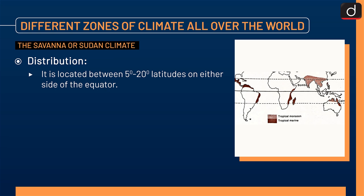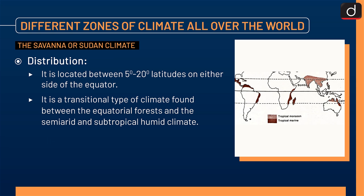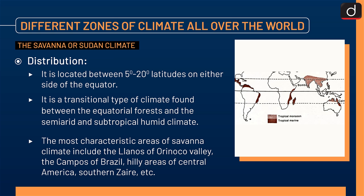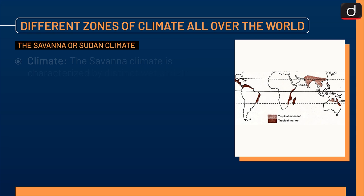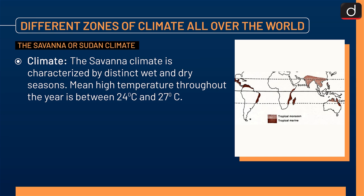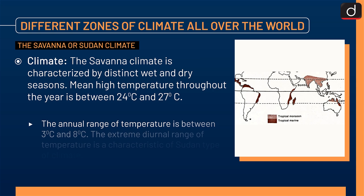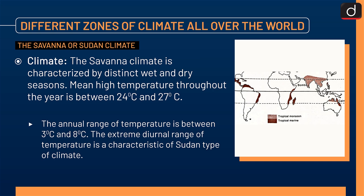The next zone is the Savannah or Sudan climate. Distribution: it is located between 5 degrees to 20 degrees latitudes on either side of the equator. It is a transitional type of climate found between the equatorial forest and the semi-arid and subtropical humid climate. The most characteristic areas include the Llanos of Orinoco Valley, the Campos of Brazil, hilly areas of Central America, Southern Zaire, etc. The Savannah climate is characterized by distinct wet and dry seasons. Mean high temperature throughout the year is between 24°C and 27°C. The annual range of temperature is between 3°C and 8°C. The extreme diurnal range of temperature is a characteristic of Sudan type of climate. The average annual rainfall ranges between 100 cm and 150 cm.